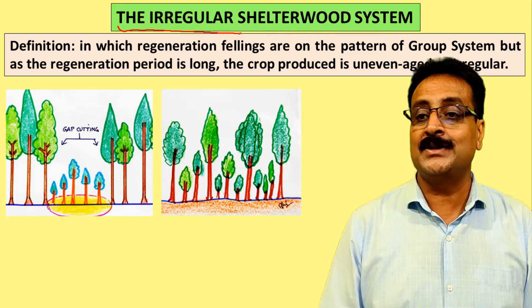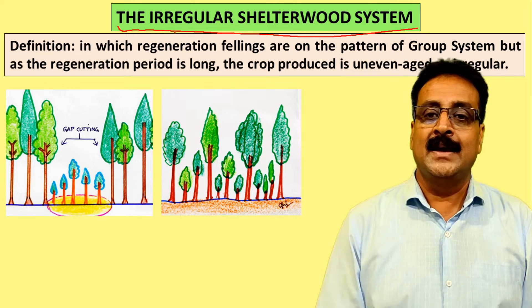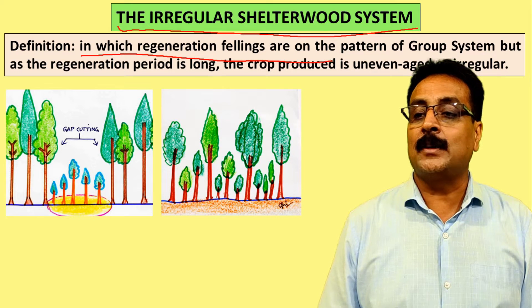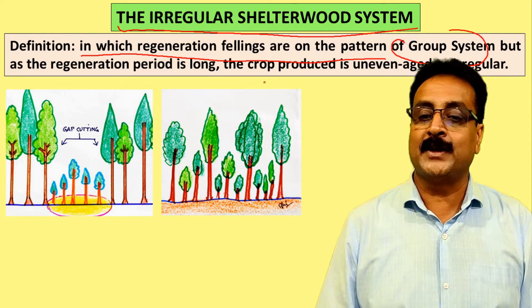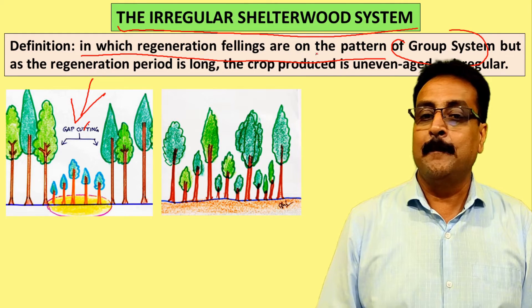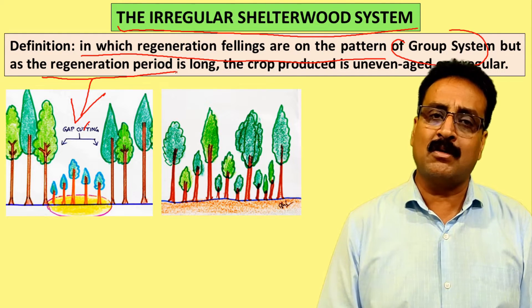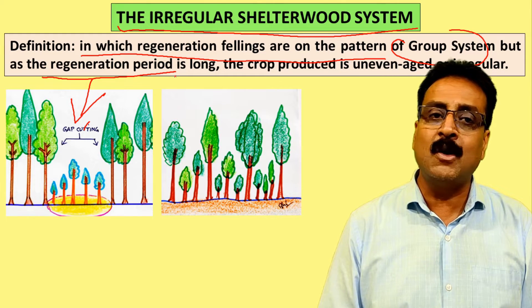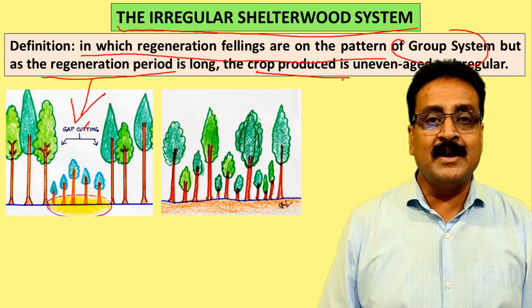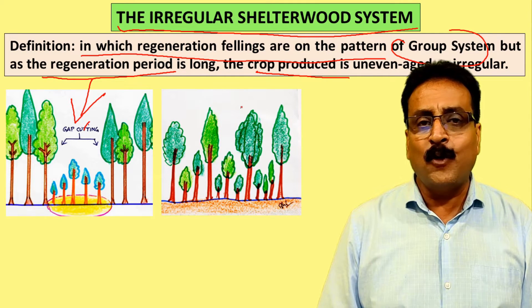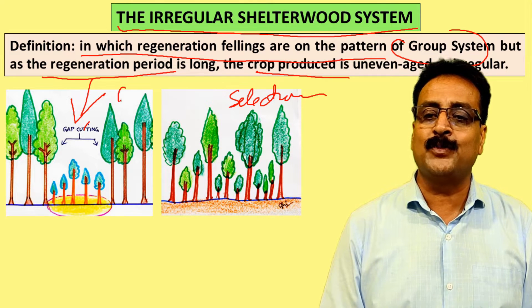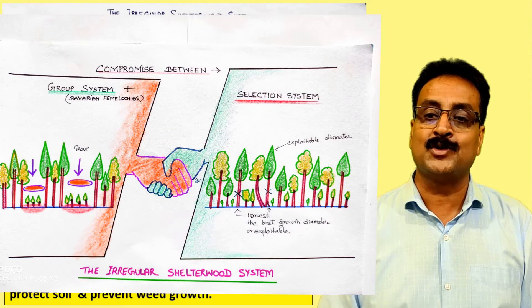Let's go back to the irregular shelter wood system. The regeneration fellings are on the pattern of a group system, but the regeneration period is very long, so we cannot follow exactly the group system and the crop becomes uneven-aged or irregular. We have to follow the selection system partly — group system one way, selection system one way — and we compromise between these two systems.